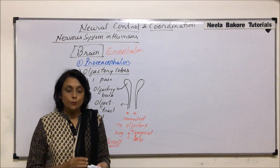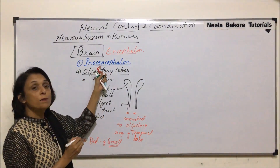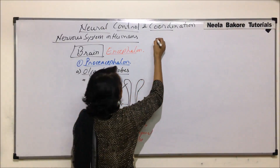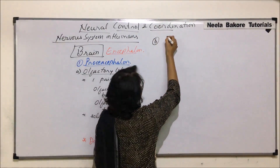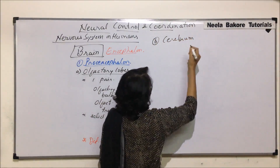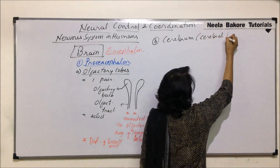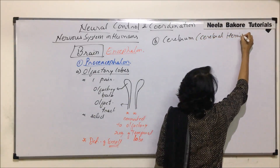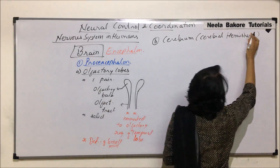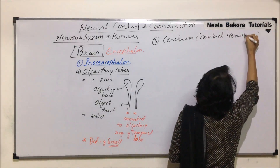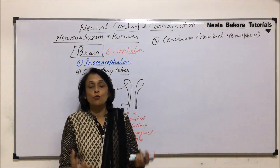The second part of the prosencephalon is the cerebrum, which is also known as the cerebral hemispheres. They are called hemispheres because they consist of two halves.